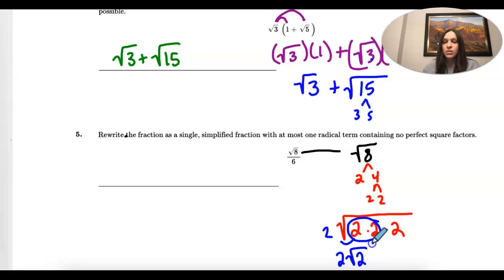So all I'm going to do is I'm going to replace 2 times the square root of 2 to where the square root of 8 is. We just wrote it in a different way. So now I have 2 square roots of 2 divided by 6.